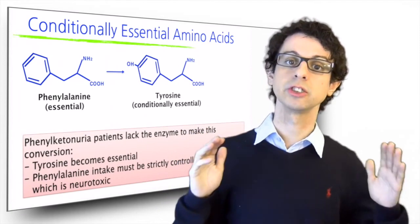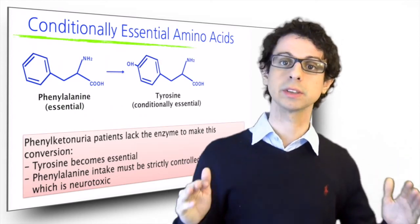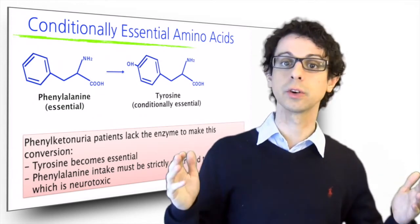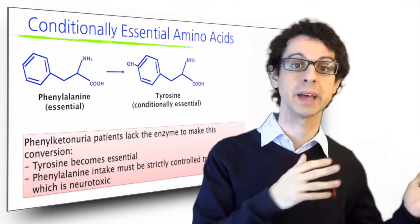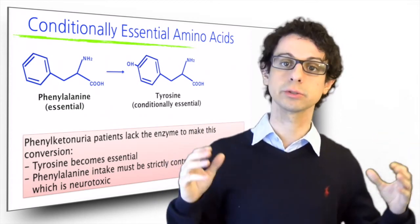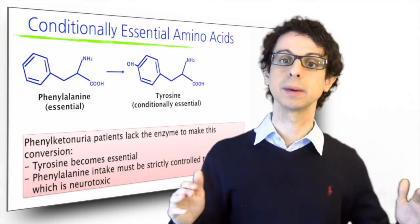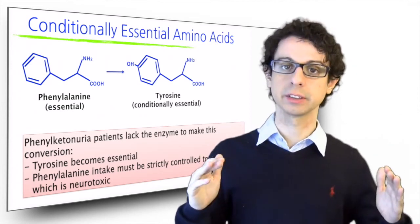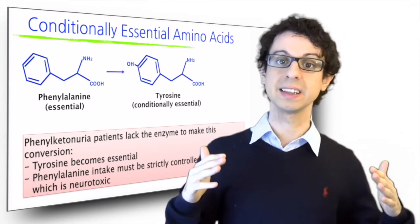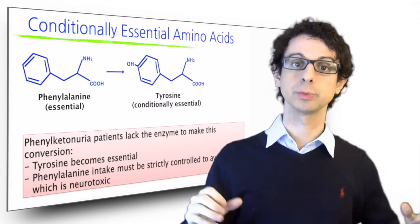Phenylketonuria is a condition resulting from a genetic defect that exemplifies how conditionally essential amino acids may become very important. These individuals lack the enzyme to make the conversion from phenylalanine to tyrosine. And this has two immediate consequences. The first, of course, is that tyrosine becomes essential because it cannot be made from anything else. And tyrosine is very important not only for protein synthesis, but also because it's the precursor of key hormones and neurotransmitters such as dopamine, noradrenaline, and adrenaline. The other consequence is that the dietary intake of phenylalanine must be strictly controlled. Indeed, conversion to tyrosine is the only pathway we have to metabolize phenylalanine if we have it in excess. If this is blocked, any extra phenylalanine cannot be cleared out and phenylalanine starts building up, resulting in serious neurological damage, because phenylalanine is neurotoxic.